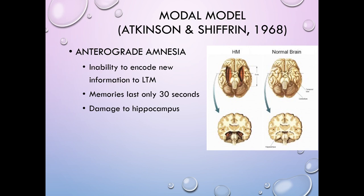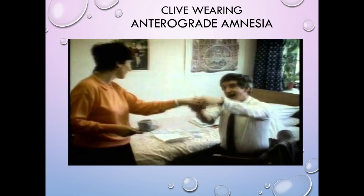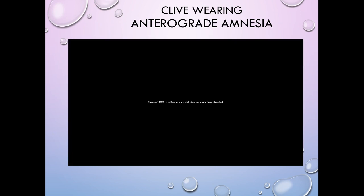Another case is Clive Wearing, a video of whom is available in the playlist. Clive developed anterograde amnesia from encephalitis — an infection that affected both hippocampuses. He also shows notable emotionality due to additional frontal lobe damage mentioned in the video. It's important to distinguish: the emotionality comes from frontal lobe damage, while the inability to store new information comes from his hippocampuses. Watch the video in the playlist and I'll see you on the other side.